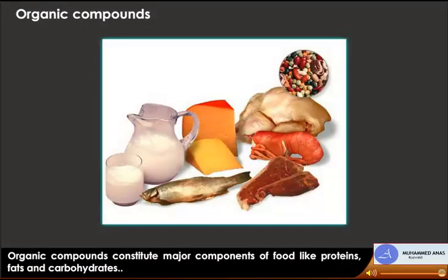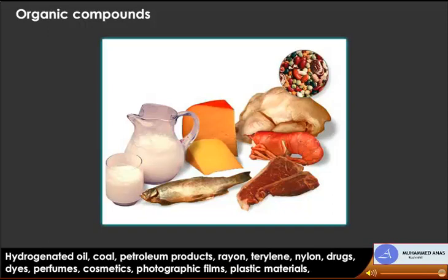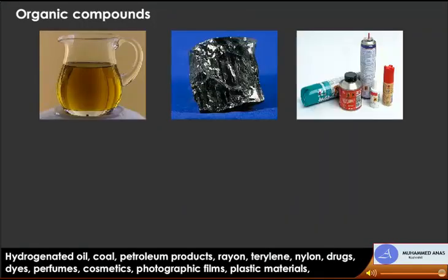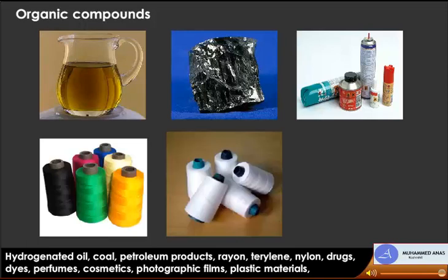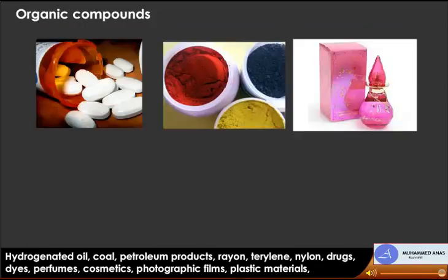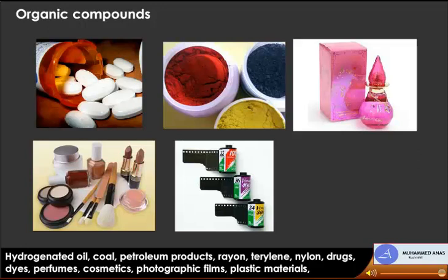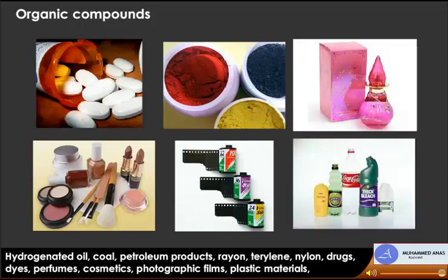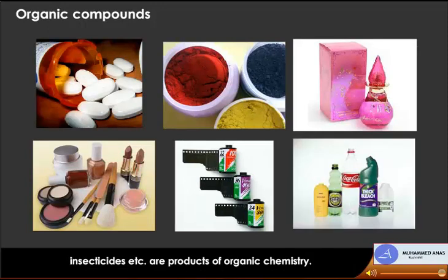Organic compounds constitute major components of food, like proteins, fats, and carbohydrates. Hydrogenated oil, coal, petroleum products, rayon, terrylene, nylon, drugs, dyes, perfumes, cosmetics, photographic films, plastic materials, insecticides, etc. are products of organic chemistry.